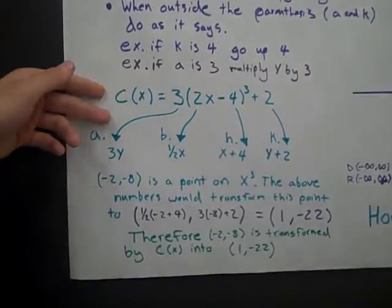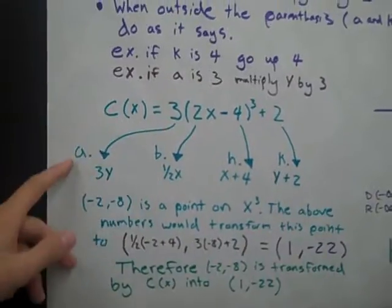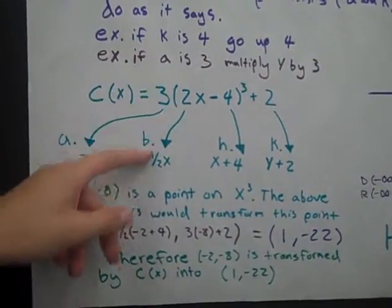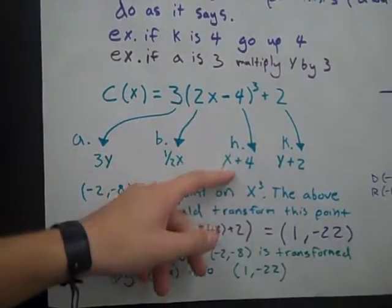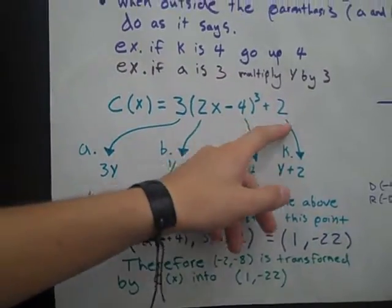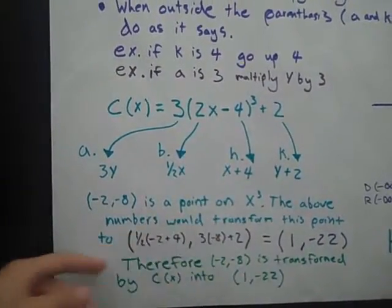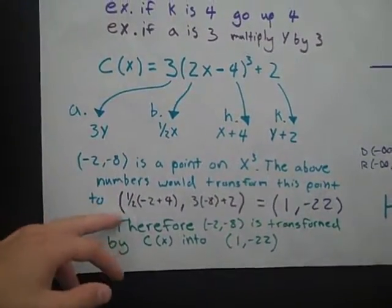This is another example of the equation where you can see the a is 3, the b is one half, negative 4 would be x plus h, and the 2 would be y plus 2. And then you combine that all together.